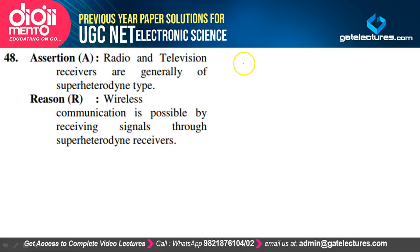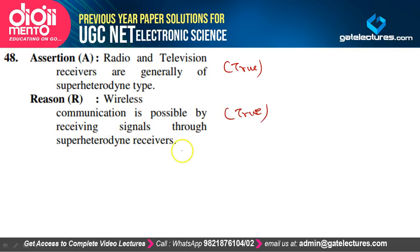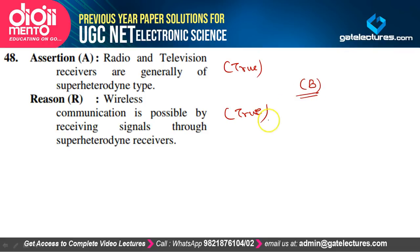Radio and television receivers are generally super-heterodyne (SHD) type — true. Wireless communication is possible by receiving signals through a super-heterodyne receiver — true. Both assertion and reason are true, but R does not explain A. Option B is correct.